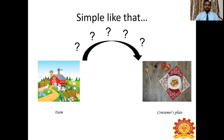Marketing channel is the route through which any agricultural commodity is being transferred from the producer to the ultimate consumer. But the problem is it cannot be easily done. The producer has to sell this product and this product has to reach the plate of a consumer. In between this farm and consumer's plate, there are lots of functions that happen. Those functions and processes are called Marketing Process and Functions.